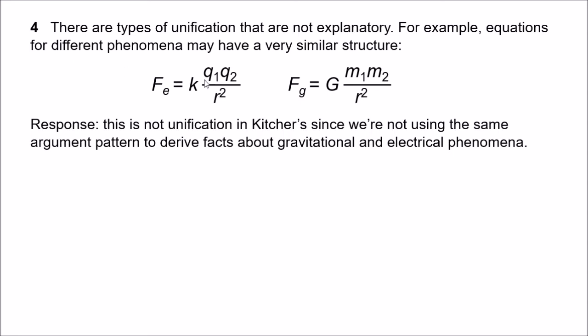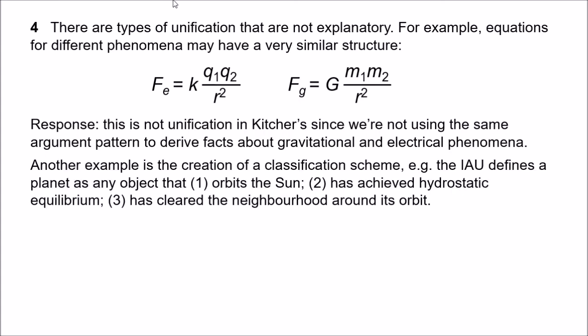Another rather different example of unification without explanation is the creation of a classification scheme. Consider classification schemes for ordering astronomical objects. In 2006, the IAU decided to demote Pluto and proposed a new definition: a planet is a celestial body that (1) is in orbit around the sun, (2) is in hydrostatic equilibrium — meaning it has sufficient mass to assume a spherical shape — and (3) has cleared the neighbourhood around its orbit, meaning it has become the dominant gravitational force in its orbital zone. Pluto fails this third criterion, as there are many objects in the Kuiper Belt orbiting independently of it.